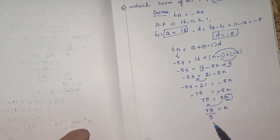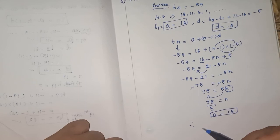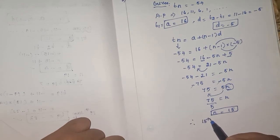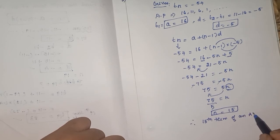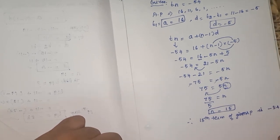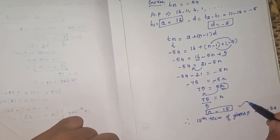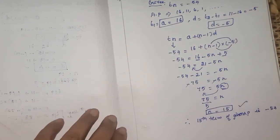So our answer is 15. Therefore, what? 15th term of an AP, given AP is what? Minus 54. 15th term of a given AP is minus 54. So n is 15. That is only asked in the question.